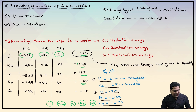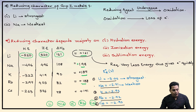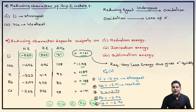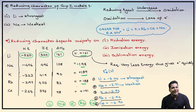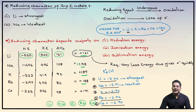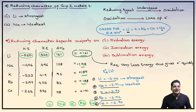So if we check the ranking: lithium ranks number one, potassium number two, rubidium number three, cesium comes out at number four, and finally at number five will be sodium. So the final order of reduction character — the highest is for lithium and the lowest is for sodium.